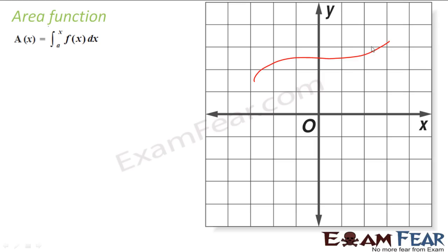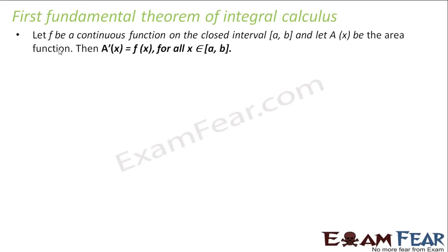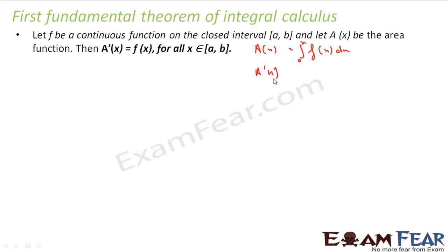The area function says that if I have a function f(x) and I integrate it from a to some variable value x, that area is A(x), denoted by ∫f(x)dx from a to x. The first fundamental theorem of calculus says that if I differentiate this area function A(x), that is A'(x) = d/dx of ∫f(x)dx from a to x, the result is f(x) itself.